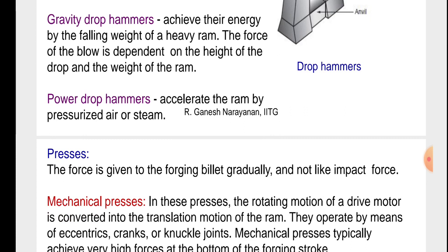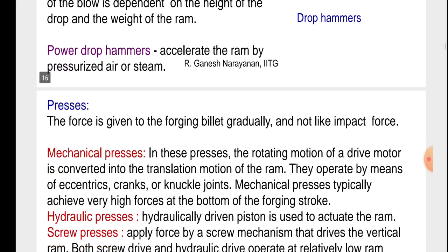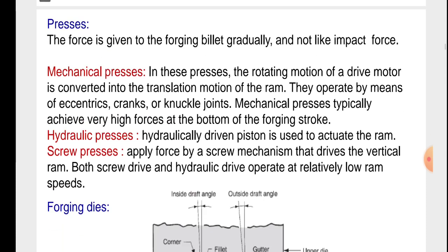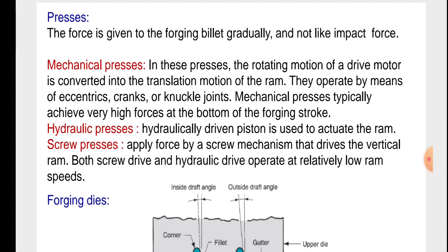Power drop hammers accelerate the ram by pressurized air or steam. In power drop hammers, force is given to the forging billet gradually and not as an impact force.